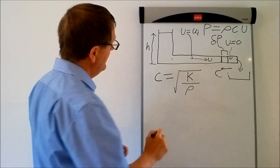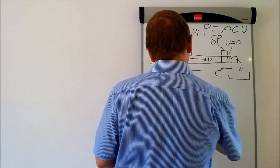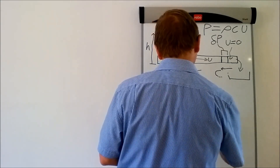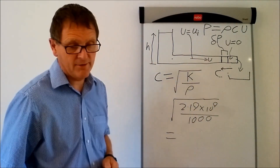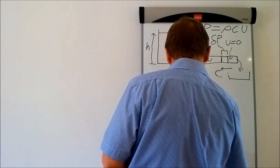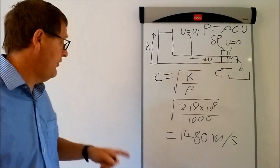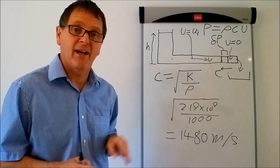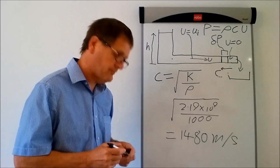For water, the bulk modulus is approximately 2.19 × 10⁹ Pa, and the density is 1000 kg/m³. If you calculate that, it comes out at 1,480 metres per second. That's the wave speed if the pipe was perfectly rigid. But it's not perfectly rigid — the pipe flexes, and the pipe flexing can make quite a big difference to the wave speed.